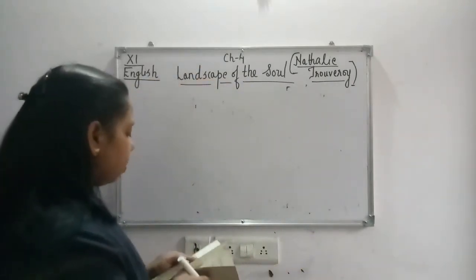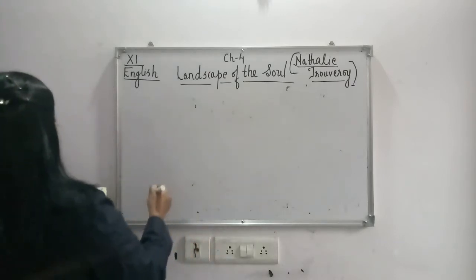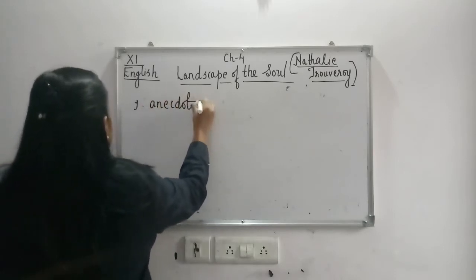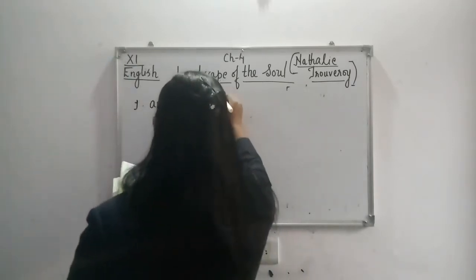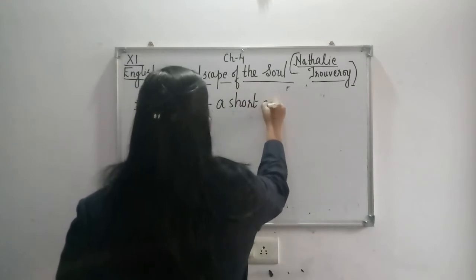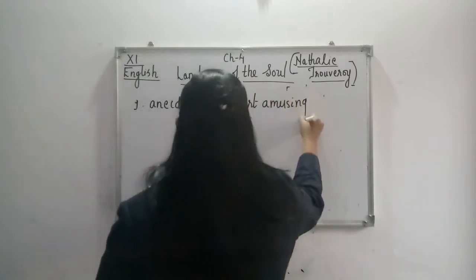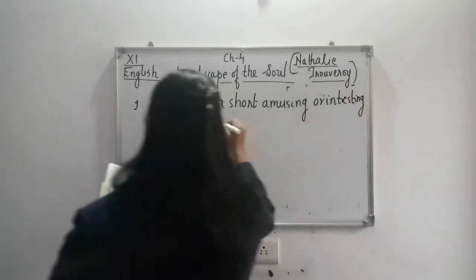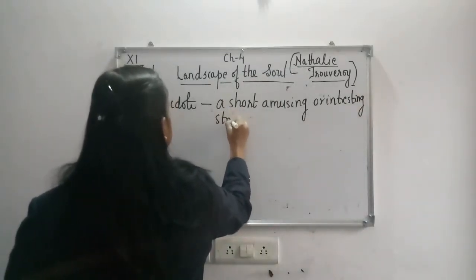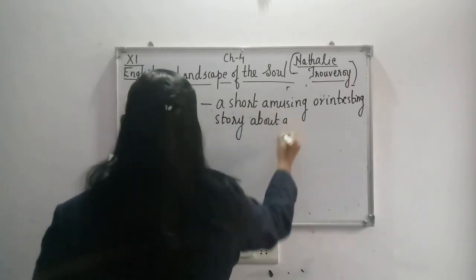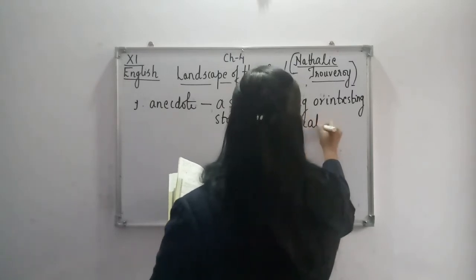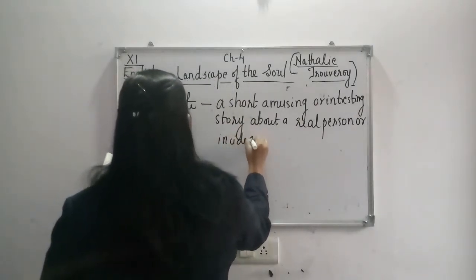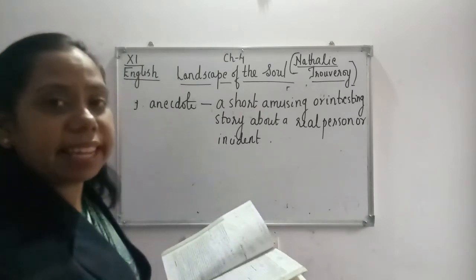The first expression is anecdote. Write down its meaning: it is a short, amusing, or interesting story about a real person or incident. The second expression is delicate realism, which means a quality of art that makes it seem real.